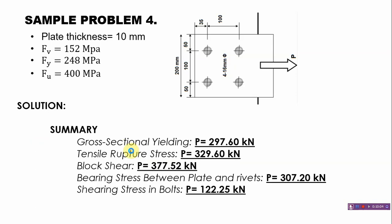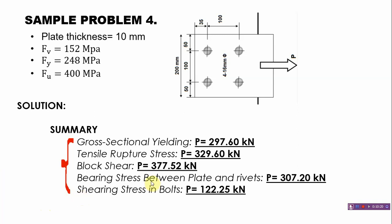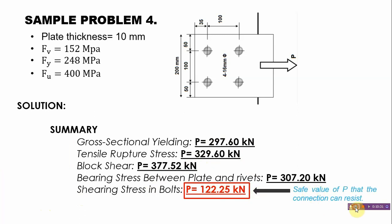In summary, the five P values are: gross yielding = 297.60 kN, tensile rupture = 329.60 kN, block shear = 377.82 kN, bearing stress = 307.20 kN, and shear stress in rivets = 122.25 kN. The safe tensile load is the smallest value: P = 122.25 kN, governed by shearing stress in the rivets. Thank you everyone, see you in problem number 5.